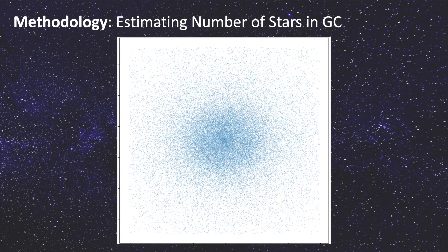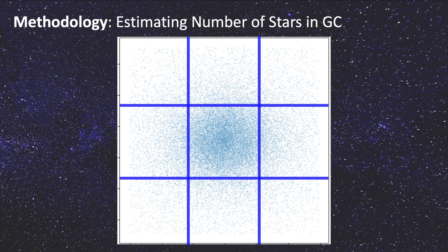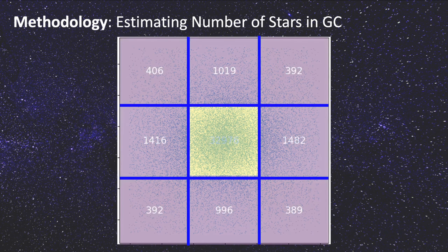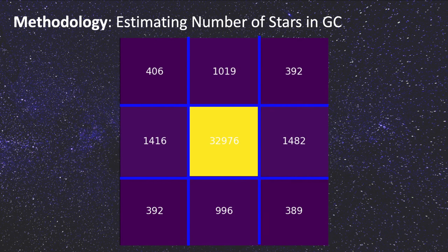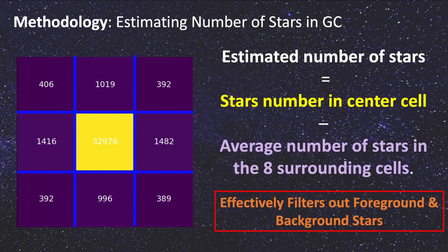In order to find the total number of stars in the cluster, the region around the cluster is divided into a 3x3 grid. To effectively filter out foreground and background stars, the number of stars in the center cell is subtracted by the average of the bordering eight cells.